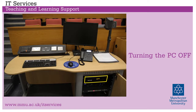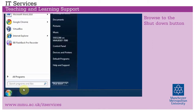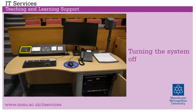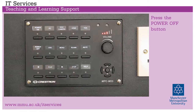Turning the PC off. Browse to the shutdown button. To turn the system off, press the power off button. Once the flashing sequence completes, the system is then off.